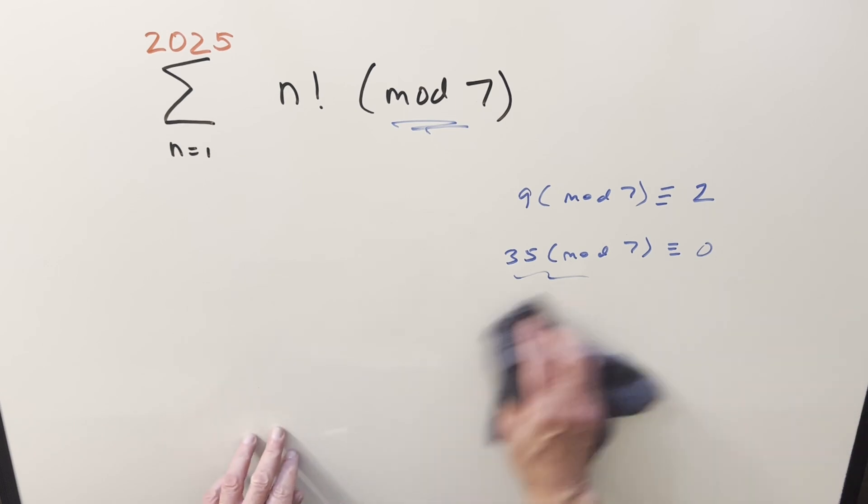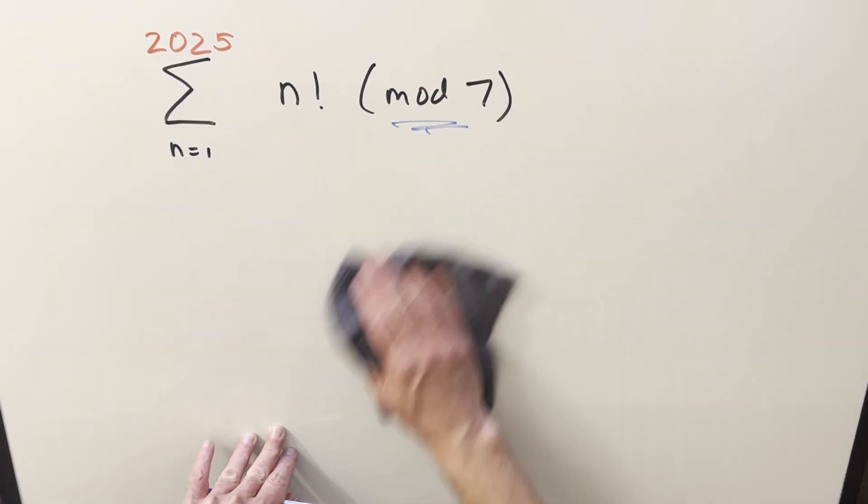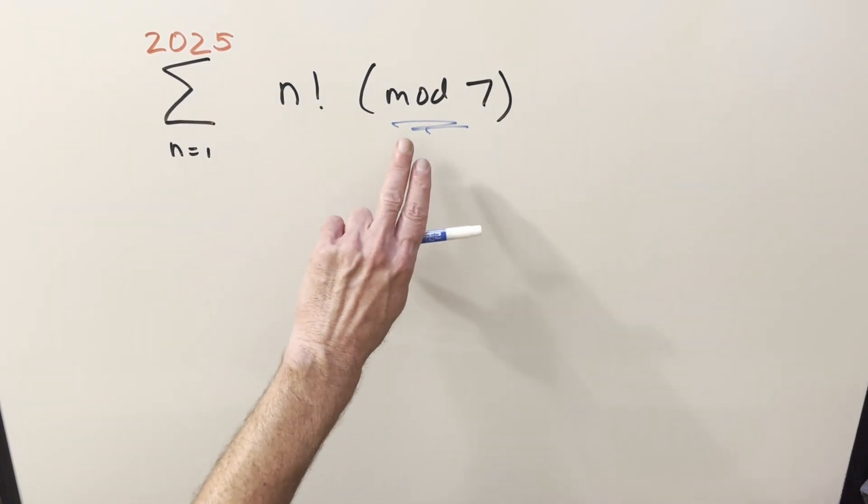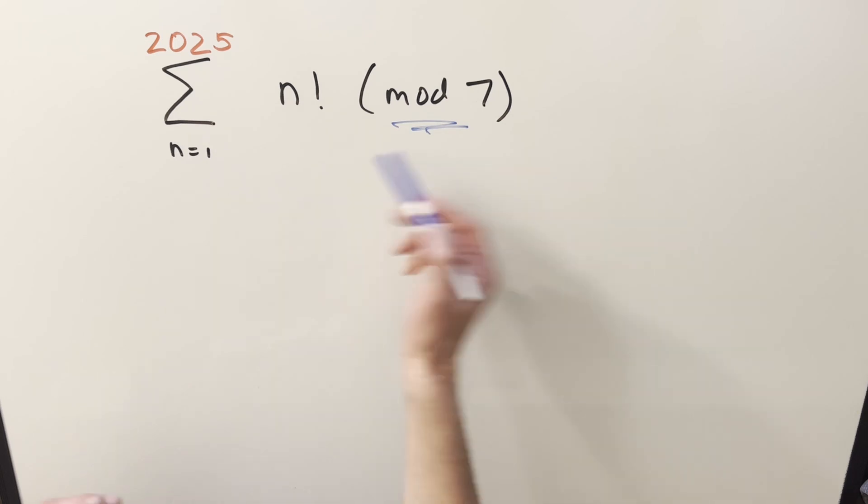So now getting back to our problem here. First of all actually someone might be wondering if it matters if mod 7 is like within the sum or outside of the sum. It actually doesn't matter with this.